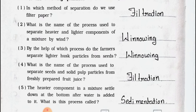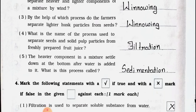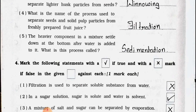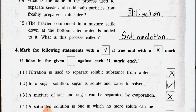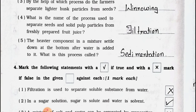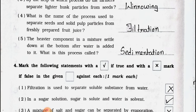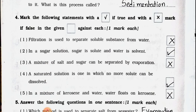Number four: What is the name of the process used to separate seeds and solid pulp particles from freshly prepared fruit juice? Answer is filtration. Number five: The heavier component in a mixture settles down at the bottom after water is added to it — what is this process called? Answer is sedimentation.